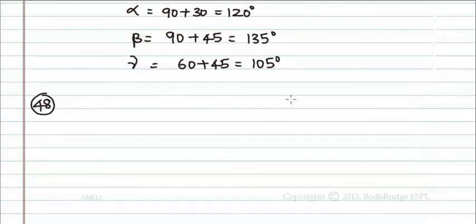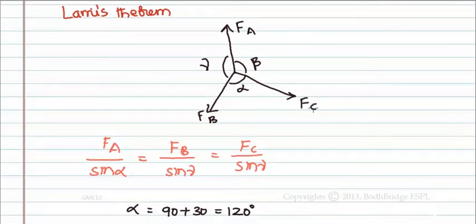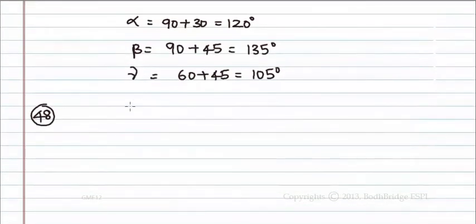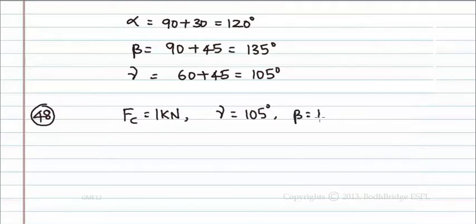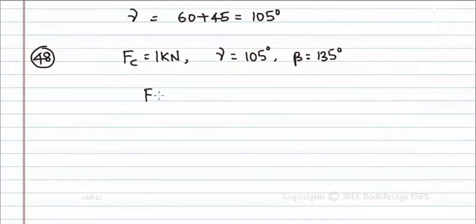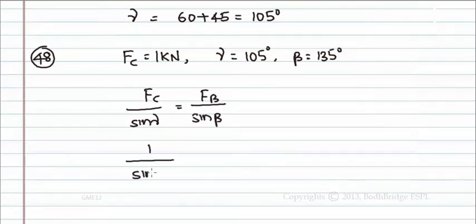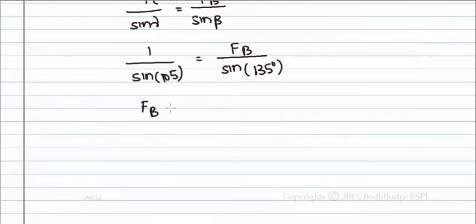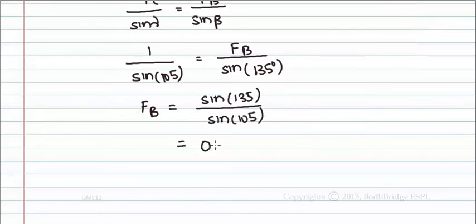For question 48, F is equal to 1 kN, so FC = 1 kN. FB is the force in truss member BC. Applying Lamy's theorem: FC/sin(gamma) = FB/sin(beta), that is 1/sin(105°) = FB/sin(135°). So FB = sin(135°)/sin(105°), which is equal to 0.732 kN.